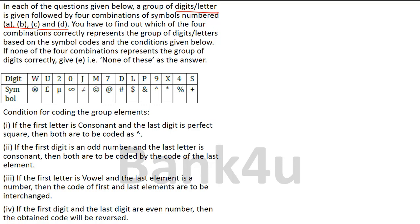So firstly, the digits are given here — W, U, 2, 0. This is 0 (zero), not the letter O. Something which is vertically lengthy is 0; if it is like a circle, that will be called O. So W will be coded with its sign, U will be coded with its sign, 2 will be mu, O will be infinity, J will be not-equal-to, M will be copyright, 7 will be at-the-rate, D will be coded as hash, L will be coded as dollar, and so on.